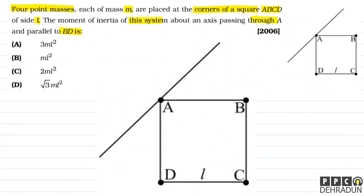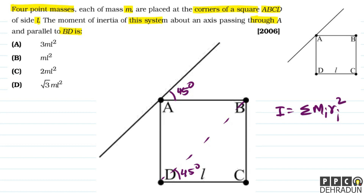तो देखिए बच्चों, अगर मैं B और D को join करता हूँ तो यह angle 45 degree है। और यह जो axis है वो BD के parallel है, तो यह angle भी 45 degree है। Clear है यह बात। अब हमें पता है कि moment of inertia होता है summation of mᵢrᵢ², तो चलिए इसका use करते हैं।